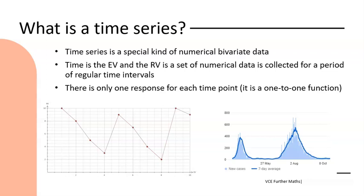Time series is a special kind of bivariate data where both of the variables are numerical. Time or a unit of time is the explanatory variable, so we might be measuring something in terms of days, weeks, months, years, usually in those sorts of time frames.